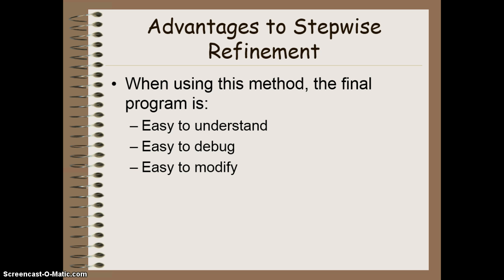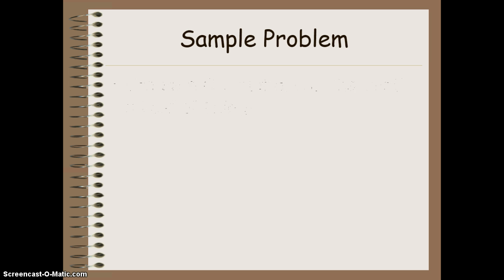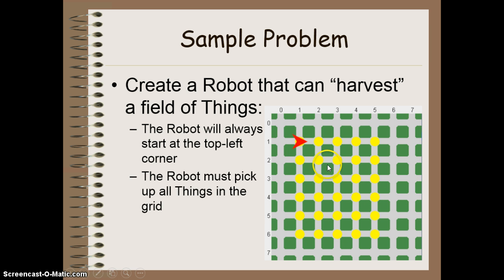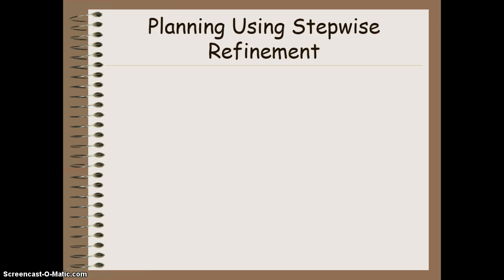If you're still a little confused, I'll take you through an example of a program that might be solved more easily using Stepwise Refinement. The program we're going to create is a HarvestBot. This particular robot is able to harvest a field that looks like a grid with five things in a row and six rows of things. The robot always starts at the top left-hand corner and must pick up all the things in the grid.